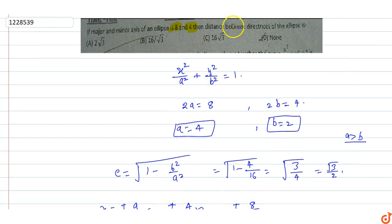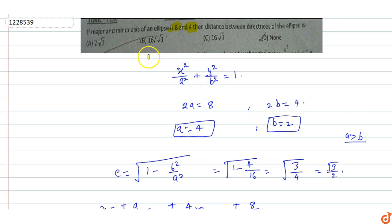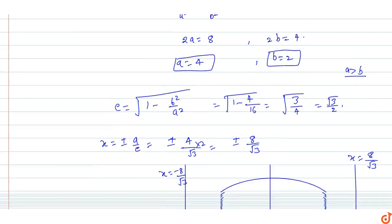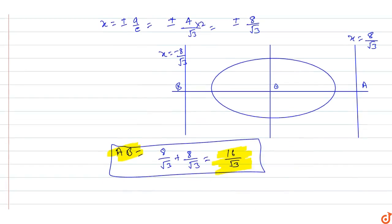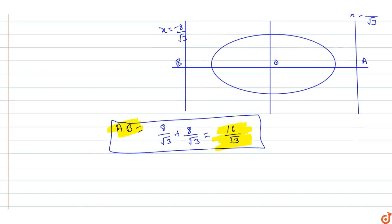So the answer to this question — the distance between the directrices of this ellipse — is 16/√3. Option B is the correct option. If the major axis and minor axis lengths are 8 and 4, then the distance between the directrices equals 16/√3.